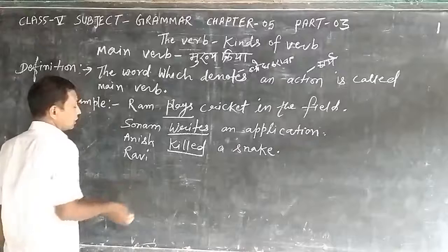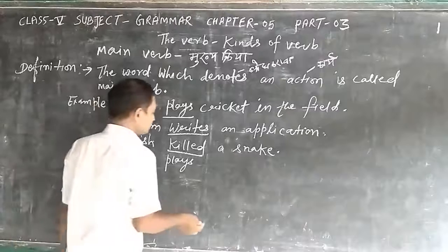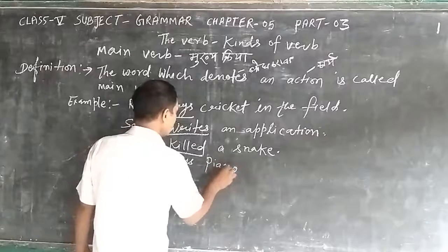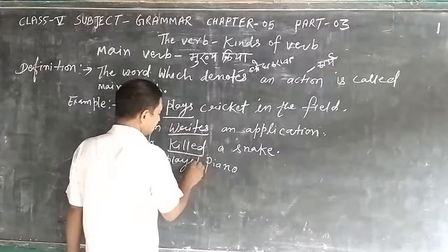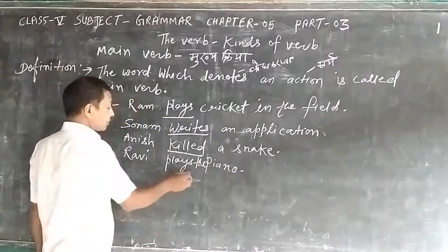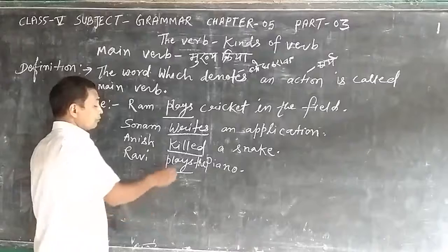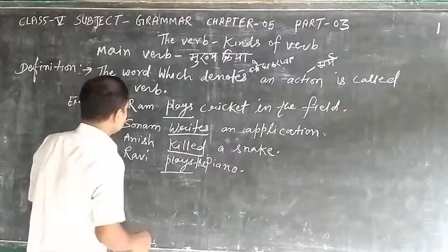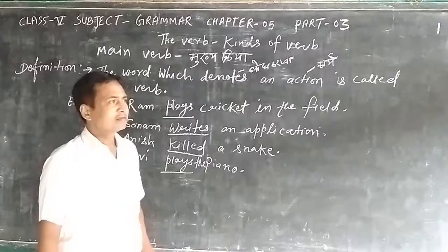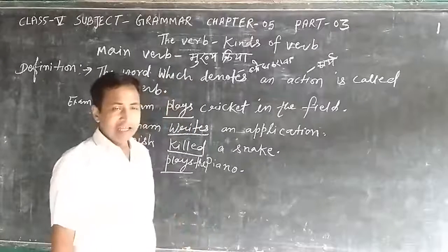Fourth example: 'Ravi plays the piano.' In this sentence, the word 'play' denotes an action. So, 'play' is a main verb. Like this, so many words denote action and they are main verbs. Examples include play, write, and kill.